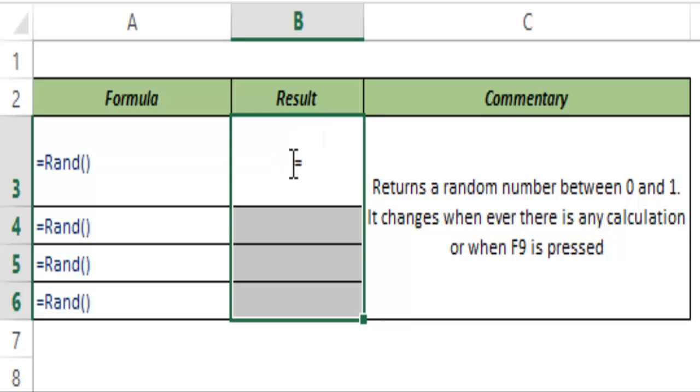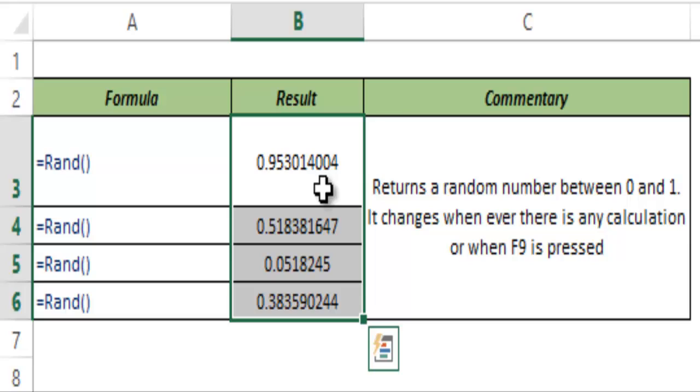Now I type RAND, hit TAB, and close the parenthesis. Instead of ENTER, since I need to enter this formula in all four cells, I would hit CTRL+ENTER. So I hit CTRL+ENTER and instantly all these four cells get filled with a random number between 0 and 1.